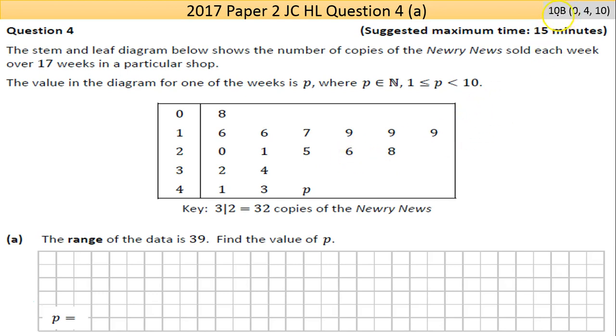This part 4a has a 10B score, so you know there's not much gradation there. If you're going to attempt it you get 4, but if you make any major error you won't get back to 4, so that's the downside there. The stem and leaf diagram below shows the number of copies of the Newry News sold each week over 17 weeks in a particular shop. That's 17, just looking through the questions, that may be important later on.